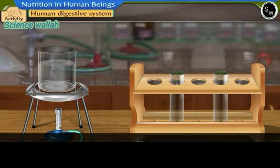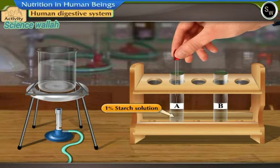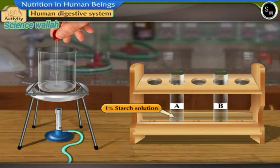Take two test tubes and label them as A and B. Add 1 ml of 1% starch solution to both the test tubes.